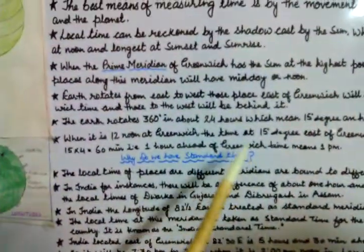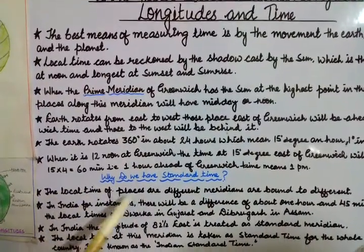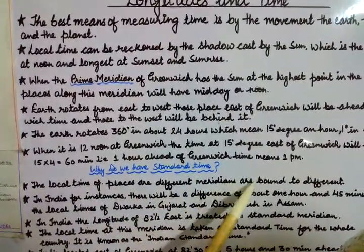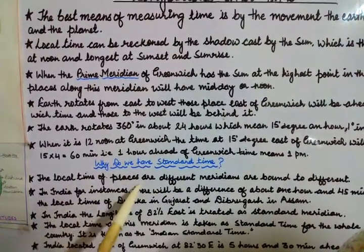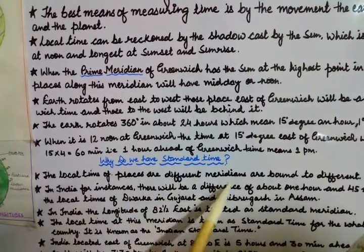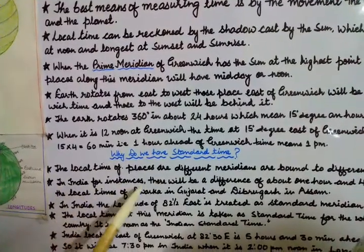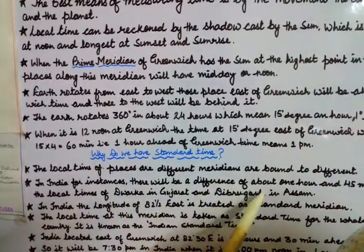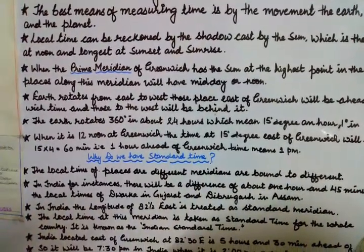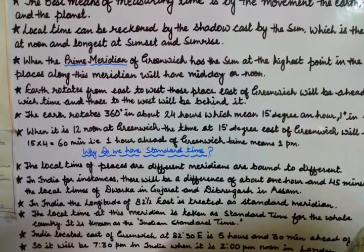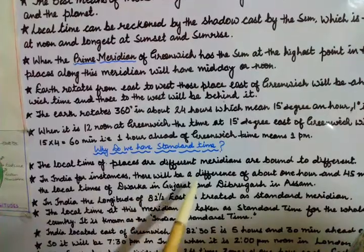Why do we have standard time? The local times of places on different meridians are bound to be different. For instance, in India, there will be a difference of about 1 hour and 45 minutes in the local time of Dwarka in Gujarat and Dibrugarh in Assam.